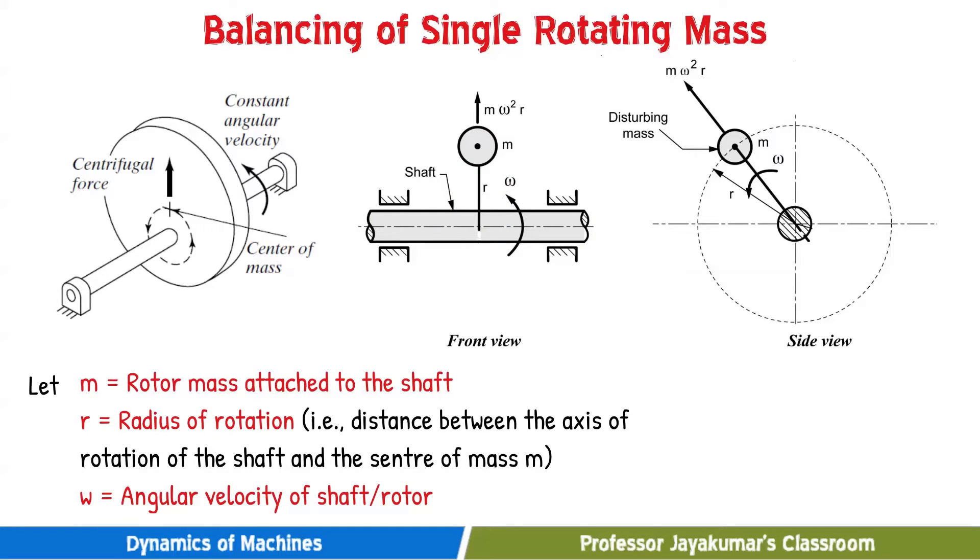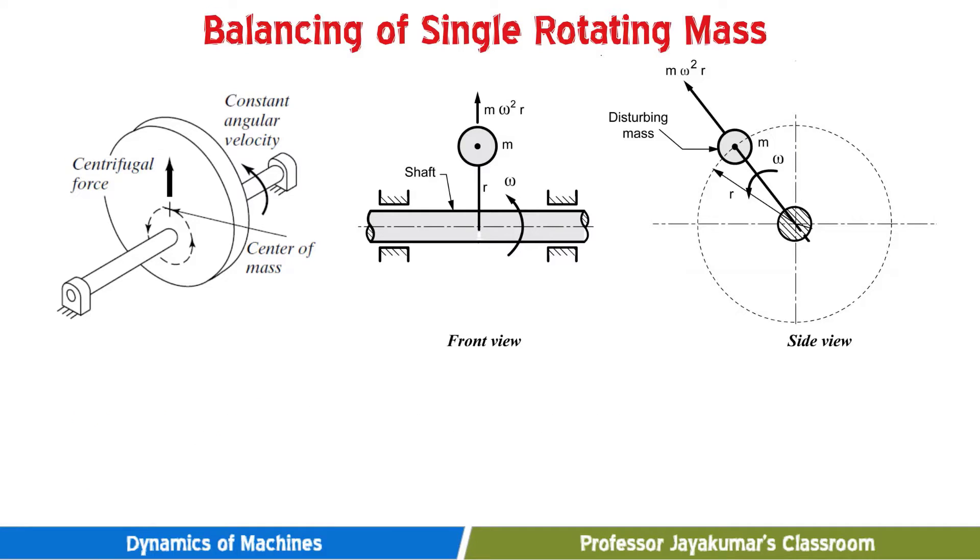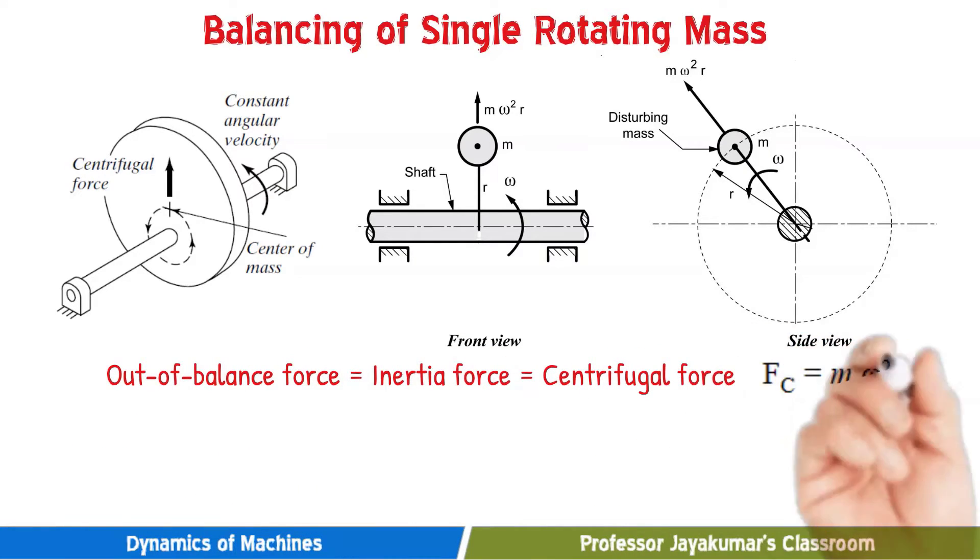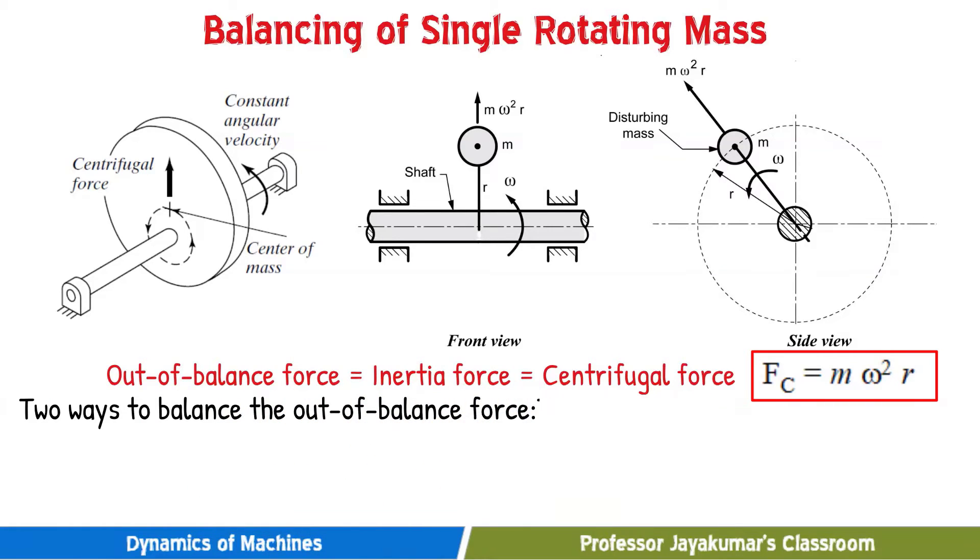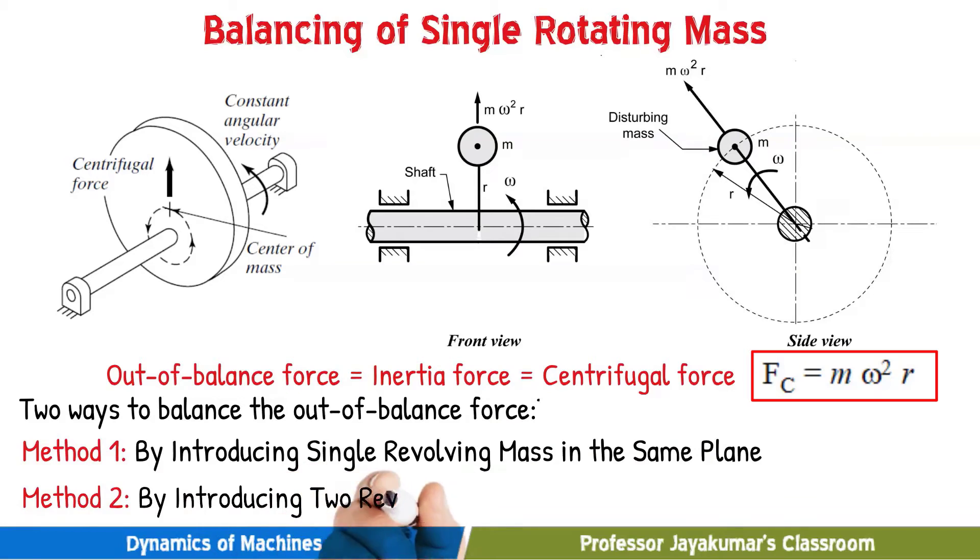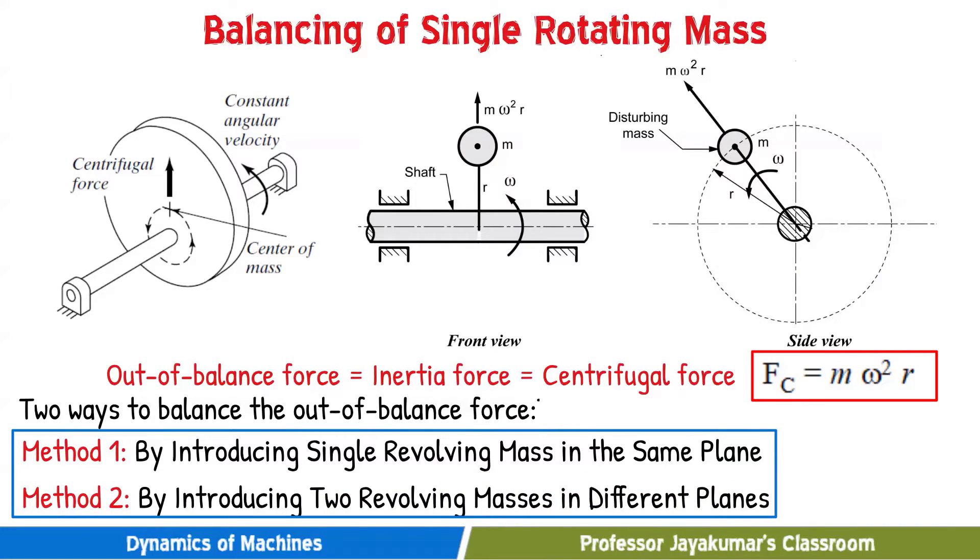Once we know the unbalancing mass, radius of rotation and angular velocity omega, we can very well determine the out of balance force which is nothing but the centrifugal force which is Fc is equal to M omega square r. So M omega square r is the unbalanced force. There are two ways to balance this out of balance force. Method one is by introducing single revolving mass in the same plane and the second method is by introducing two revolving masses in different planes. We will solve both the methods one by one now.